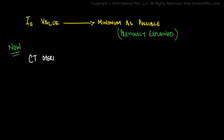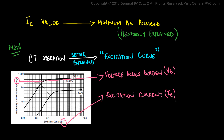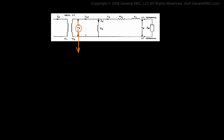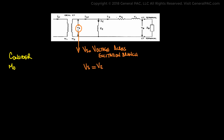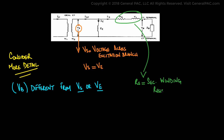The CT operation can be easily explained by the excitation curve. This curve shows the relationship between the voltage across the burden and the excitation current. Vs is the voltage across the excitation branch as pointed out by this diagram, and also sometimes described as VE. Keep in mind that the voltage across the burden is Vb, and there is a difference between the voltage across the excitation branch Vs and the voltage across the burden. The difference comes from the secondary winding resistance RS and leakage reactance XL — that's how we're modeling it.